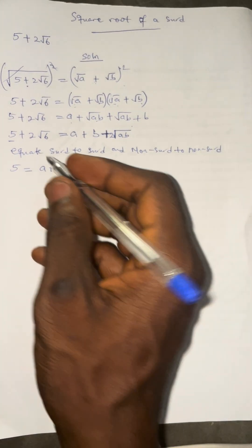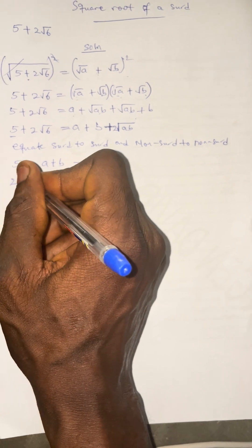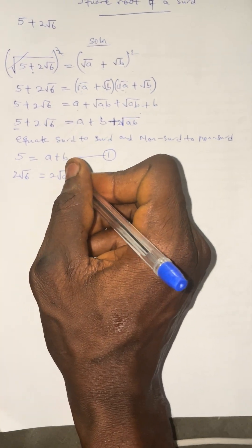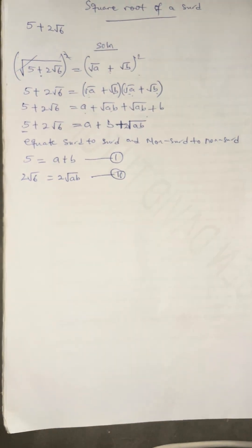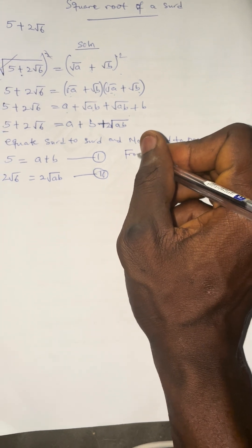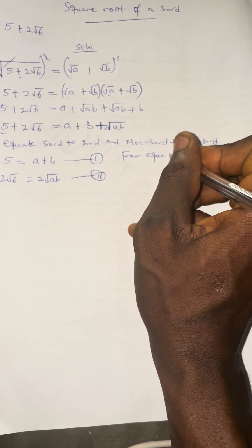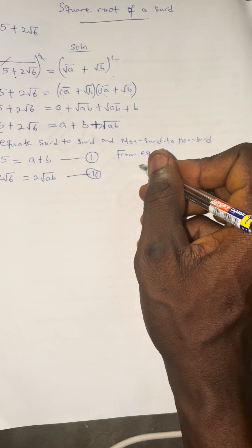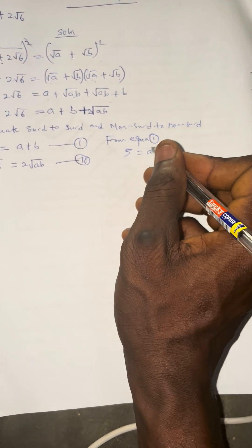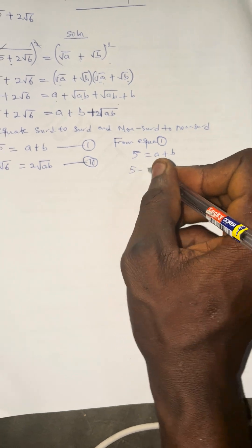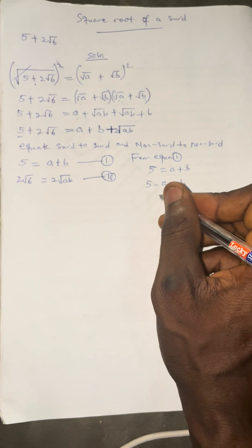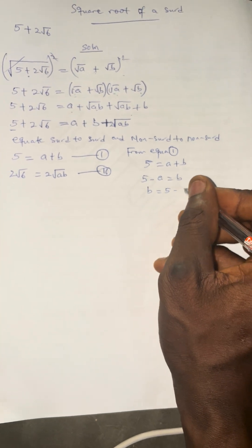For the surd parts: 2 root 6 equals 2 root AB. This is equation 2. From equation 1, we have 5 equals A plus B, so B equals 5 minus A.